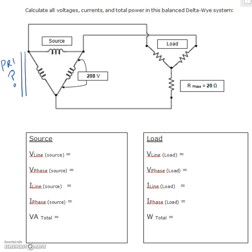Alright guys, next example — we've got a delta source and a Y resistive load. Looking at the given values, there's a voltage provided and a resistance on the phase of 20 ohms. Each of these is balanced, so all three resistors are 20 ohms.